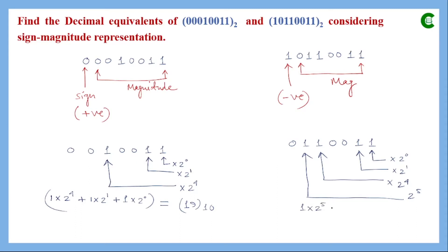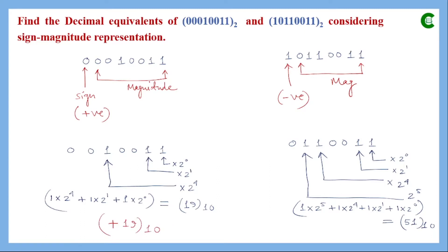For the second number, the magnitude bits give us 2 to the power 5 plus 2 to the power 4 plus 2 to the power 1 plus 1, which equals 32 plus 16 plus 2 plus 1 = 51. Since the first number's MSB is 0, its decimal value is plus 19. Since the second number's MSB is 1, its decimal value is minus 51.